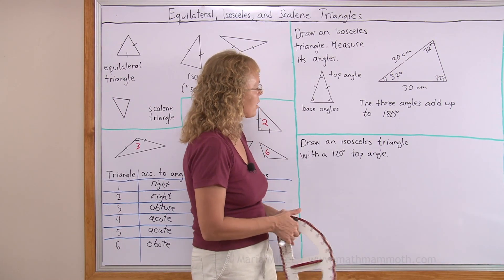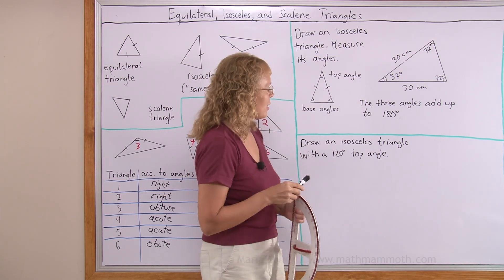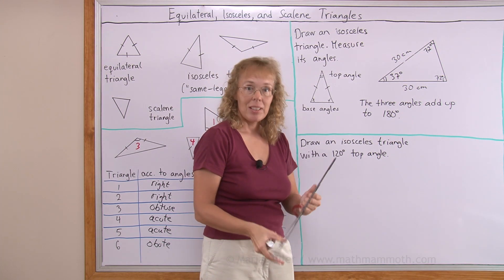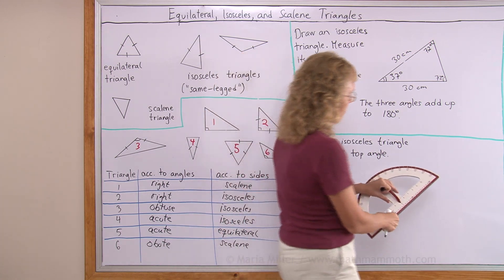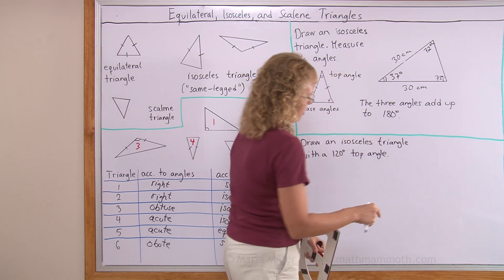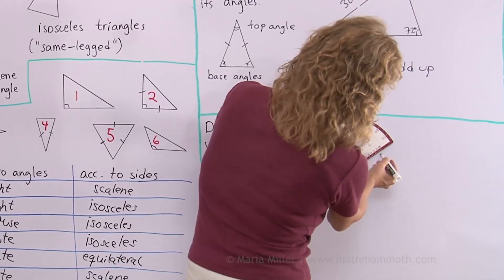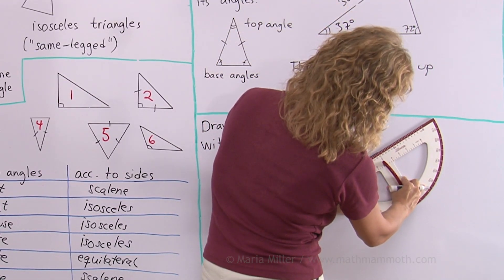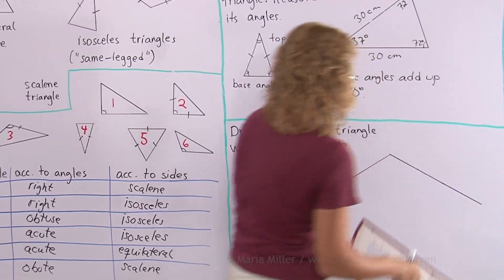Here we are asked to draw an isosceles triangle with a 120 degree top angle. And we don't need to know anything else to be able to draw it. Because I can just draw the angle. Let me draw the angle and then I will choose the sides. Or maybe if I want to make it a top angle and draw it like here. And then measure angle of 120 degrees. There.